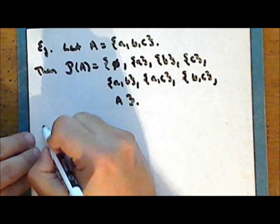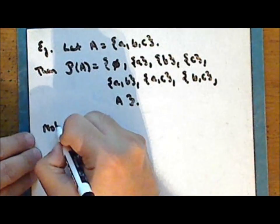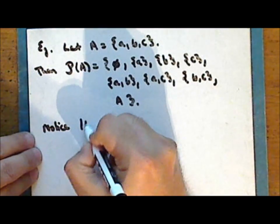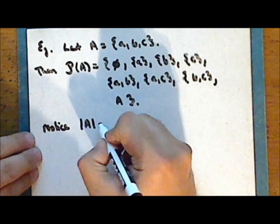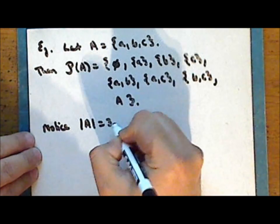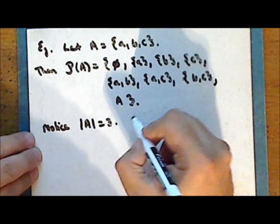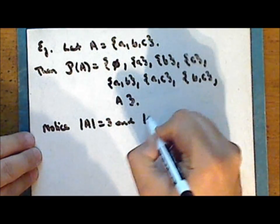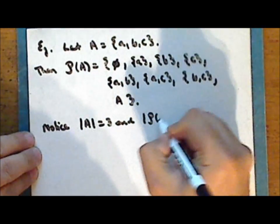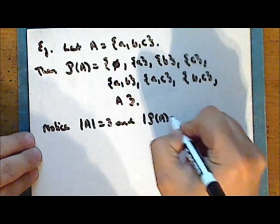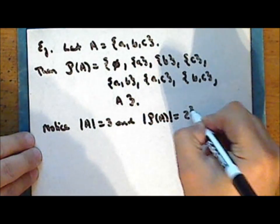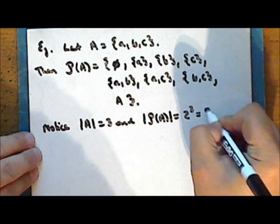Notice that the cardinality of the set A is 3 and the cardinality of the power set of A is 2 to the third power, or 8.